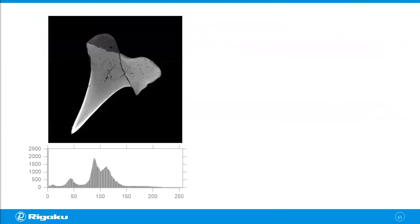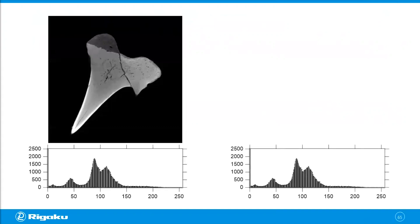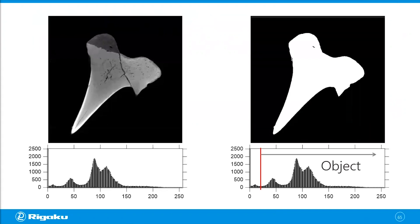Let's take a look at histogram-based thresholding in more detail. This is a cross-section of a shark tooth, and if you look at its histogram, you can set a threshold and say everything on the right side is the object and the rest is the background. You can then segment this image into the object and the background. A common way to set this threshold is to adjust the value and look at the image to see what number gives you the results you want. That works fine, but it is a little operator dependent.